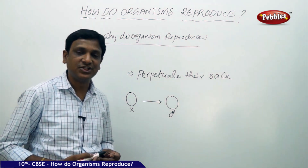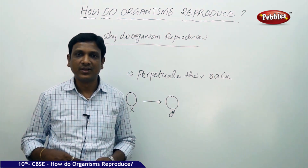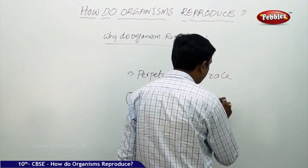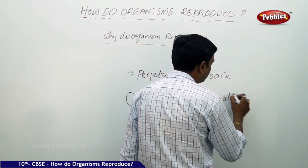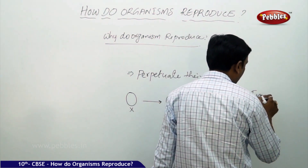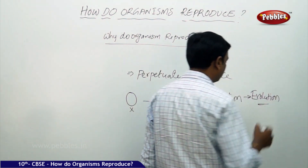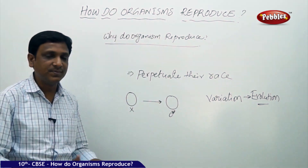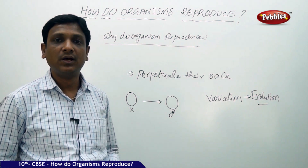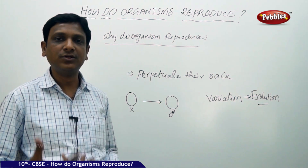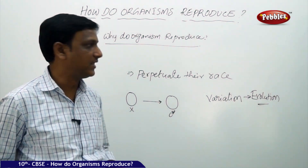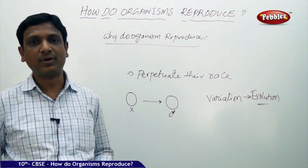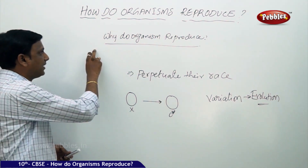Reproduction brings variations — small changes in organisms. These variations are the basis for the important biological process of evolution of species. If these variations did not exist, this many species would not have evolved — not even human beings. We might not have evolved into Homo sapiens if there were no variations. There are no variations if there is no reproduction. That is the importance and the reason why organisms reproduce.